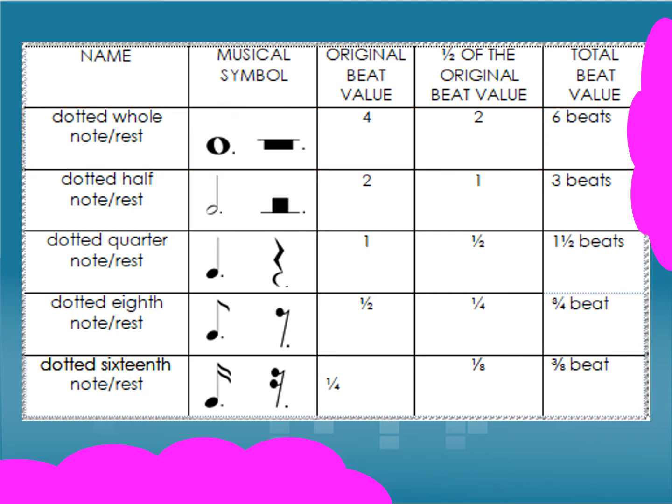The second row refers to dotted half notes and rest. The original beat value is two and one half of the original beat value is one. Therefore, a dotted half note or rest has a total beat value of three beats.